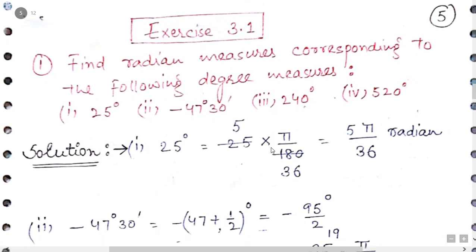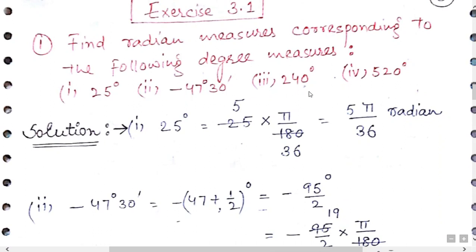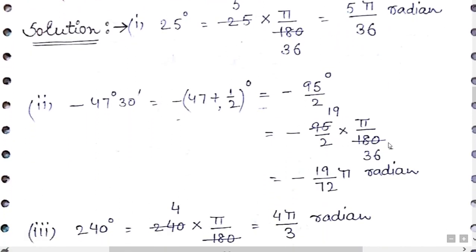Let us start with the exercise. The first four angles — 25°, −47°30', 240°, and 520° — need to be converted into radians by multiplying by π/180. For −47°30', first convert 30 minutes into degrees: 30/60 = 1/2 degree, giving −95/2 degrees. Multiply by π/180 to get −19π/72 radians. For 240° and 520°, simply multiply by π/180 to get 4π/3 and 26π/9 radians respectively.